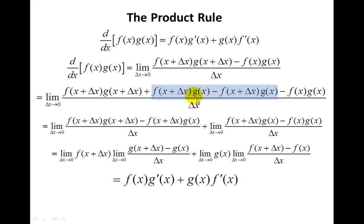The reason I did that — which seems like foolishness, why would I add something and then subtract it off? I did it so that I could do a regrouping. I'm going to take this difference quotient and group the first term with the subtracted f(x + Δx)g(x) over Δx, keeping the limit as Δx goes to zero. Then I take the rest — the f(x + Δx)g(x) with the f(x)g(x) — and give it another limit. I've taken the limit of a sum and written it as the sum of two limits, which is valid.